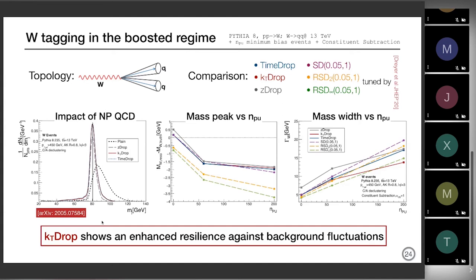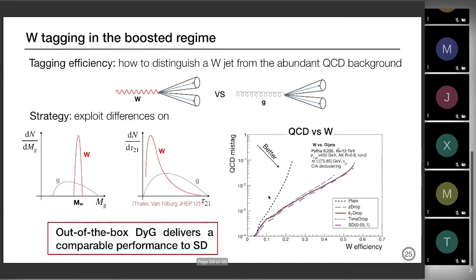Without grooming I just get the dashed black line — the plain distribution is shifted to the right and smeared compared to the groomed distribution. Now I take my jets and apply dynamical grooming for z drop, kt drop, and time drop: my distributions are now way narrower and better centered at the resonance value. If I characterize the distribution by the mass peak and mass width as a function of the number of pileup interactions, the dynamical grooming family shows the mass peak is way closer to the truth value compared to recursive soft drop, and the width is comparable or even smaller.